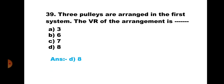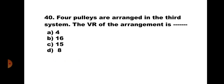Question number 40: Four pulleys are arranged in the third system. The VR is: A) 4, B) 16, C) 15, D) 8. For the third system of pulleys, VR = 2^N − 1, where N is the number of pulleys. With N = 4, VR = 2⁴ − 1 = 16 − 1 = 15. The correct answer is C) 15. With this, we finish all questions of simple lifting machines in two parts.